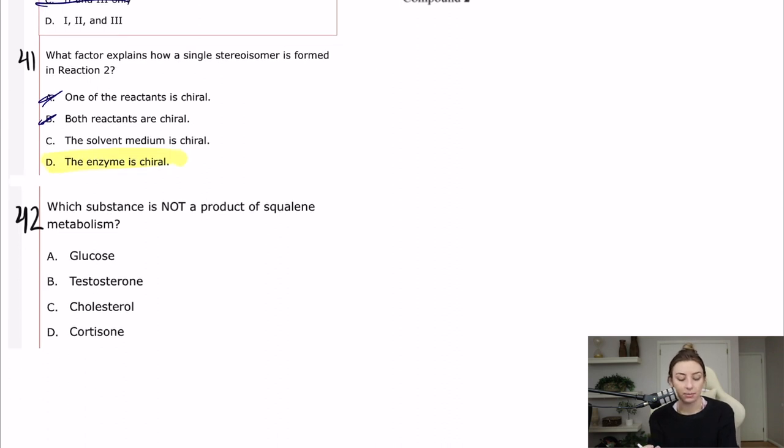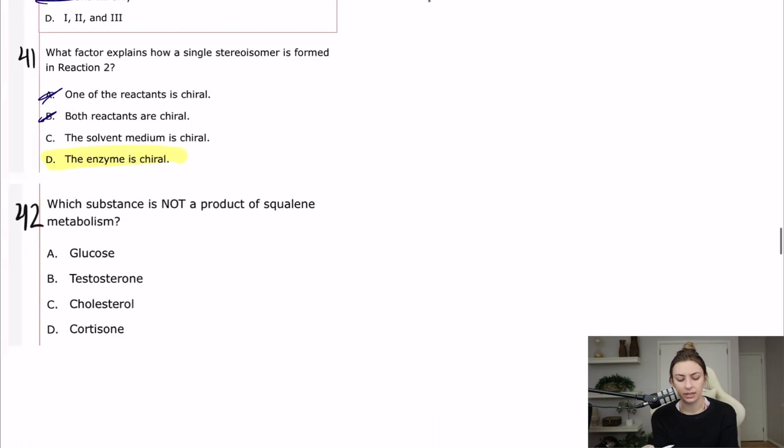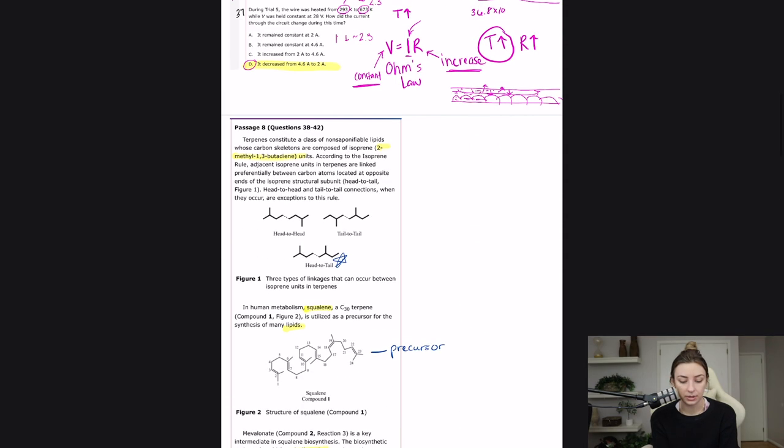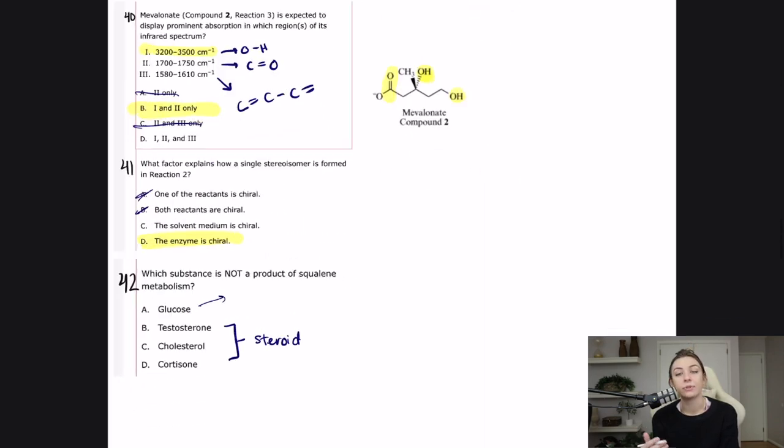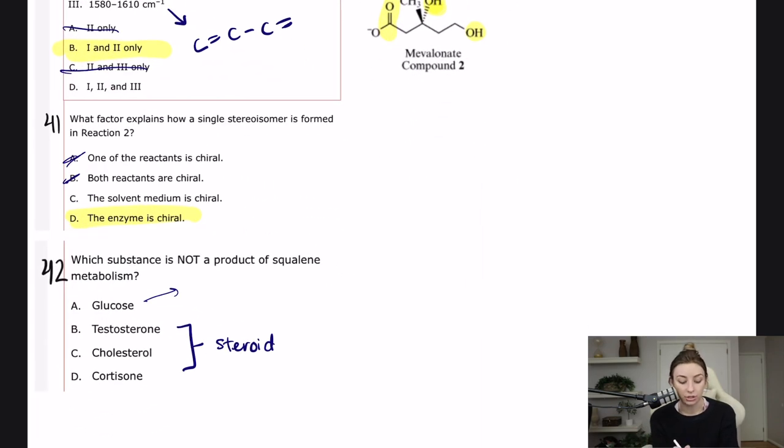Question 42: Which substance is not a product of squalene metabolism? Glancing down, I see glucose, testosterone, cholesterol, and cortisone. I see something sticking out and you should too—these are all steroids or steroid-like molecules, molecules created with steroids as a precursor. Glucose is very different. You notice this is what squalene looks like, and I talked about how it looked like it was a precursor maybe for steroids. This is really a question of do you know what all these things look like? You should know that these are all examples of steroids and that glucose is totally different, has a bunch of alcohols and things like that. It's which one of these is different basically from the rest.